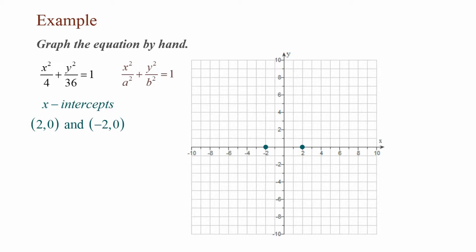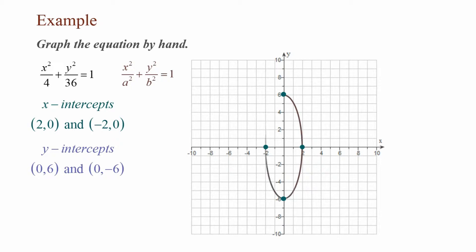Once I've plotted those points, I'm ready to find my y-intercepts. b² = 36, which means b = 6. So my y-intercepts are (0, 6) and (0, −6). Once I've plotted those four intercepts, I can graph my ellipse. Now I have the graph of x² / 4 + y² / 36 = 1.